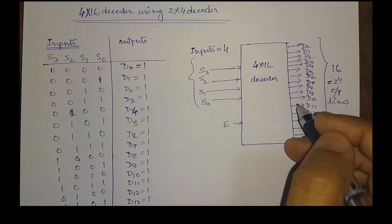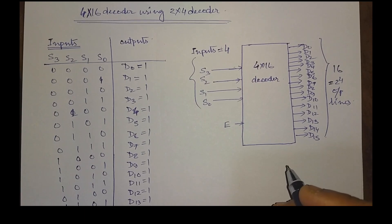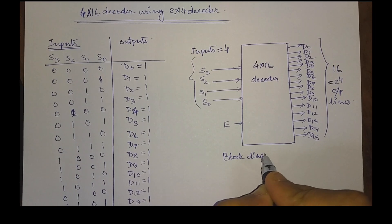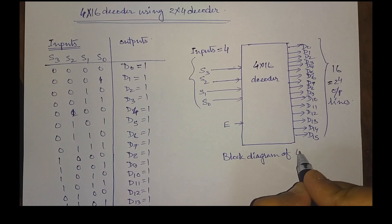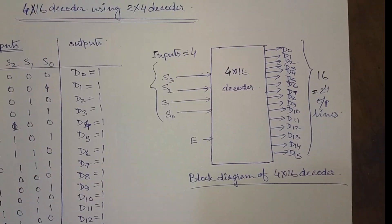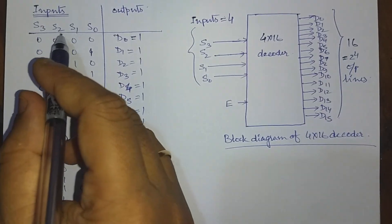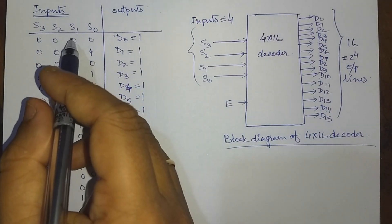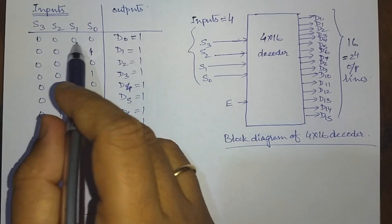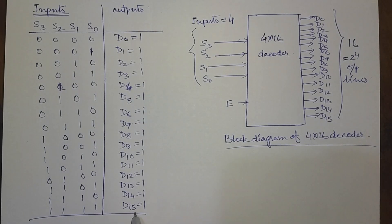So how to design this 4x16 decoder using a 2x4 decoder. This is the block diagram of the 4x16 decoder. Now we will see the truth table. In a 4x16 decoder, we have 4 inputs: S3, S2, S1, and S0, so we have 16 combinations. Accordingly, any one of the outputs will be high. That means for 0000 we will have D0 equal to 1, for 0001 we will have D1 equal to 1, and so on. And for 1111 we will have D15 equal to 1.